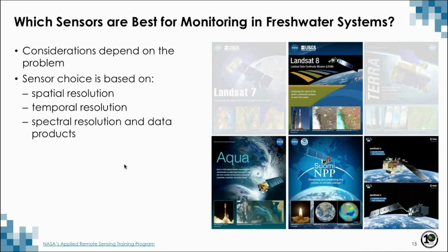In part one, we reviewed satellite missions used for water quality monitoring. Which ones are best for freshwater systems, and why? A lot comes down to the issue of resolution — spatial, temporal, and spectral resolution. One of the major considerations for freshwater systems is the size of the body of water.